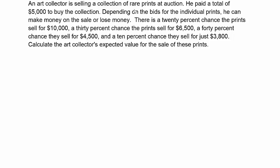An art collector is selling a collection of rare prints at auction. He paid a total of $5,000 to buy the collection. Depending on the bids for the individual prints, he can make money on the sale or lose money. There is a 20% chance the prints sell for $10,000, a 30% chance the prints sell for $6,500, a 40% chance they sell for $4,500, and a 10% chance they sell for just $3,800. Calculate the art collector's expected value for the sale of these prints.